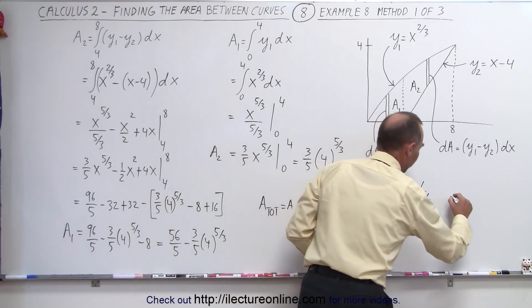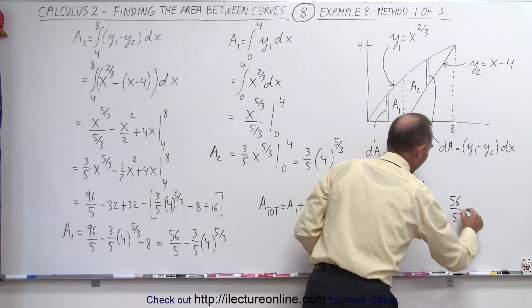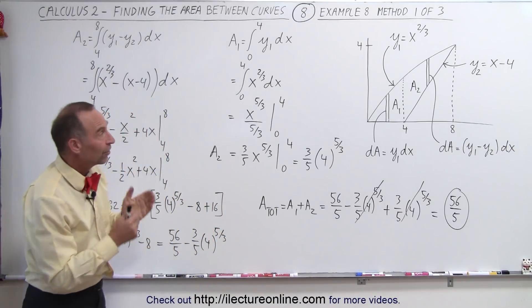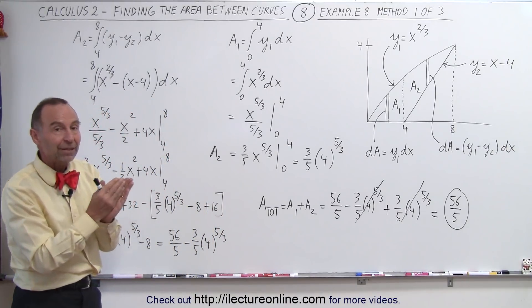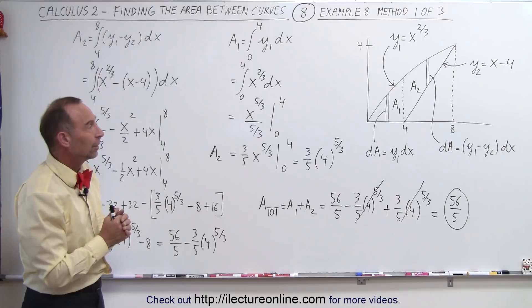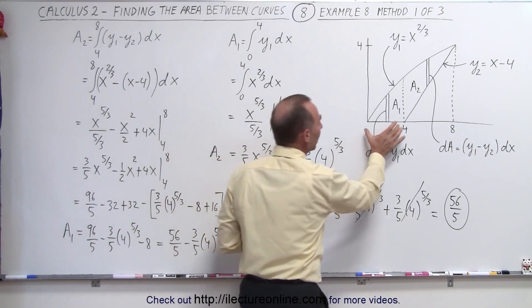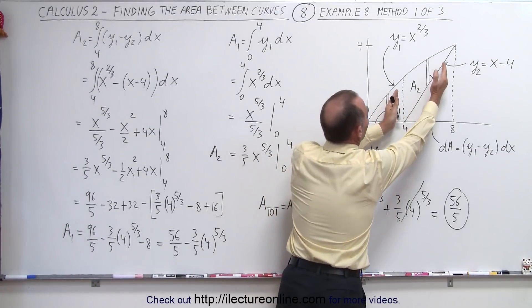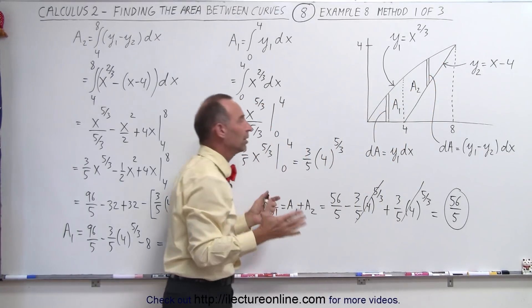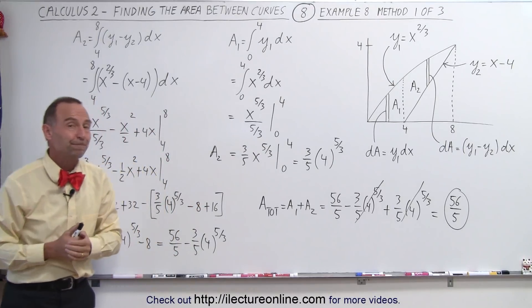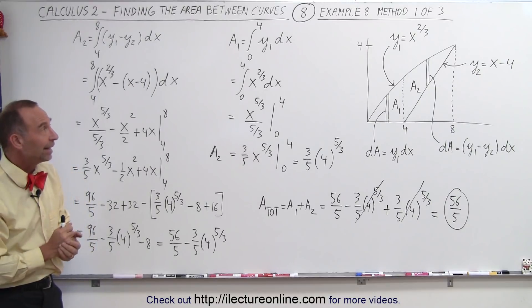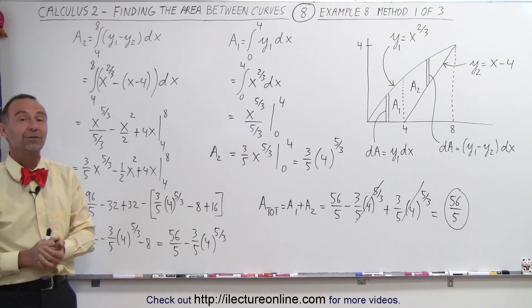We're left with 56 over 5. So there it is — method number one. If you can see that your area element cannot be the same throughout the entire integration, then you have to split it up so that the area element matches A1 in one region and A2 in another, and integrate them separately. You'll see the two other methods in the next two videos for comparison.